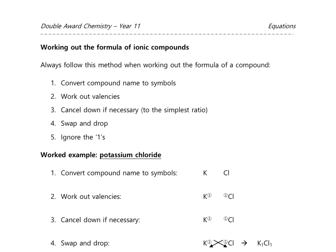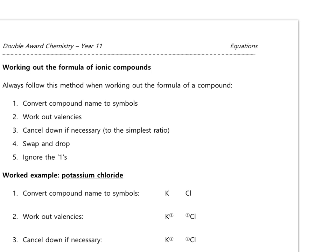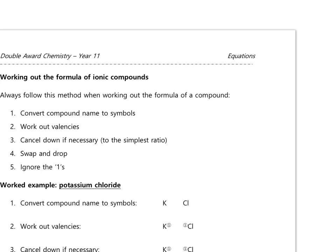So to summarise: if an element has a group number, find valency from that. If it's a transition metal, you'll either be given a number in brackets or look at the back of the periodic table. Now let's put that into practice. We use valencies to write chemical formulas. The first example is potassium chloride, worked through on page five.